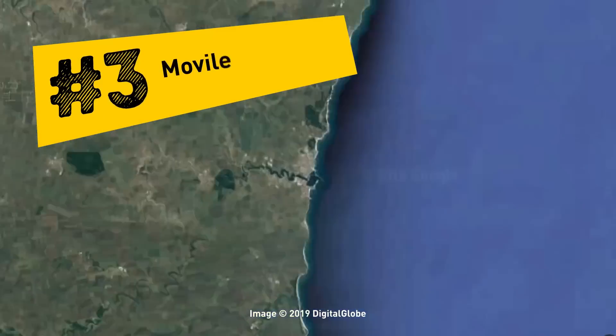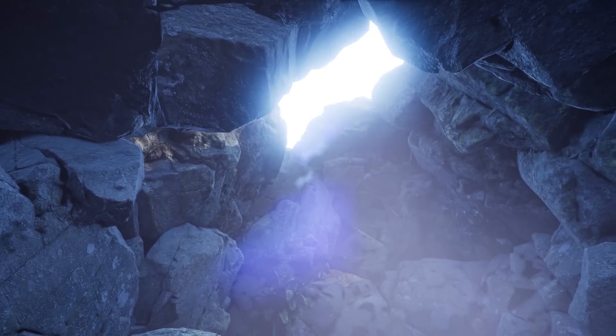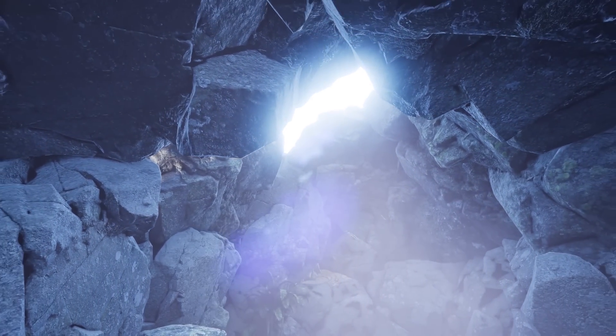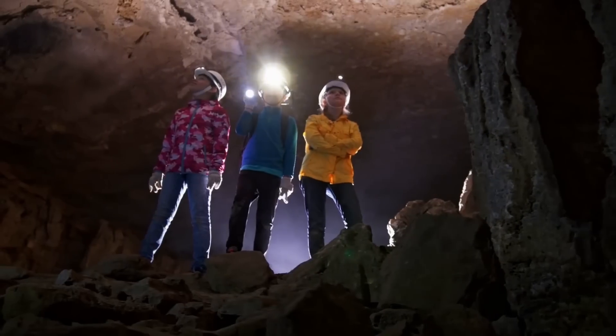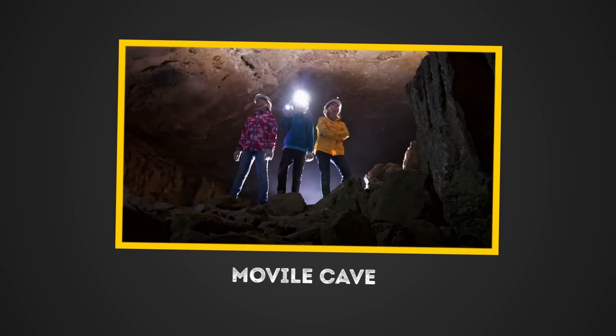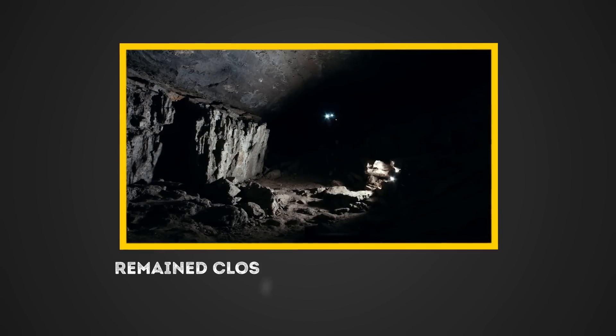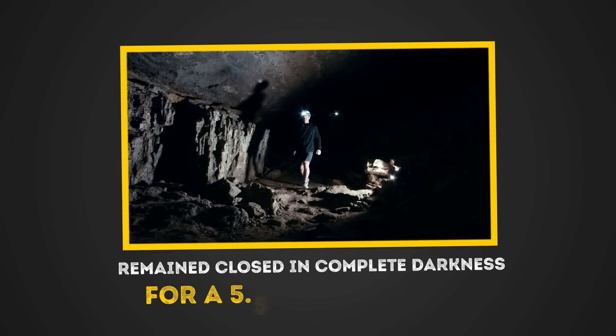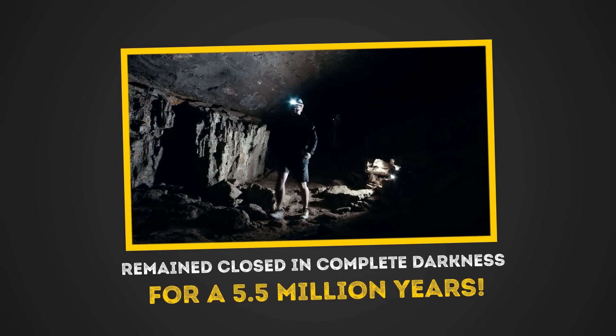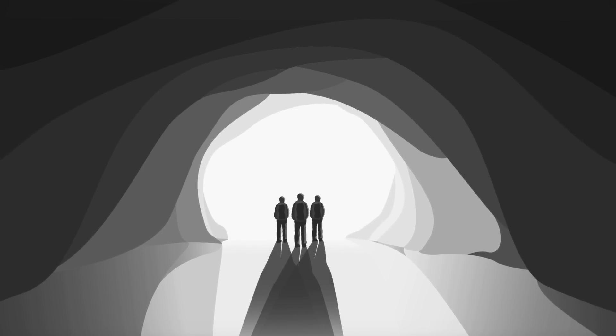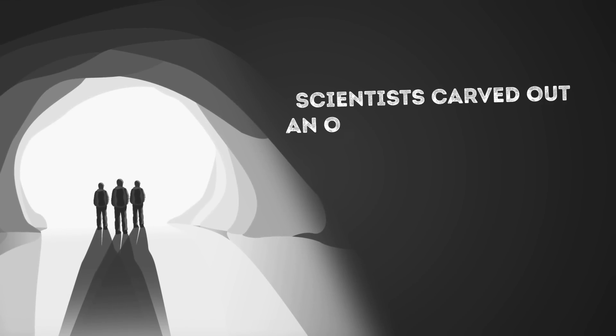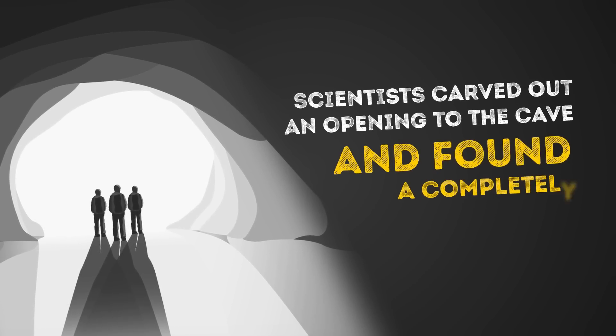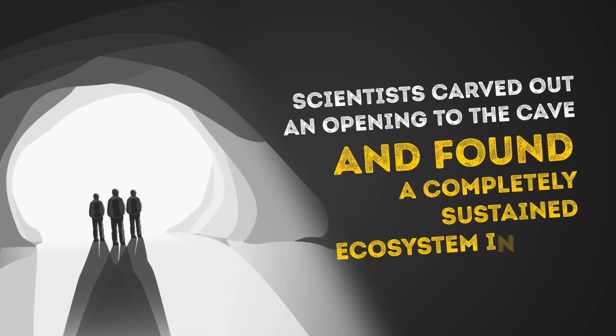Number 3. Movile Cave. Can you believe that there's a place on Earth with its own ecosystem and atmosphere similar to another planet? Well, start believing! Movile Cave, located in southeastern Romania, remained closed in complete darkness for a whopping 5.5 million years. It wasn't until workers discovered the cave when they were looking for a place to build that anyone learned about it. Scientists carved out an opening to the cave and found that a completely sustained ecosystem was thriving inside.